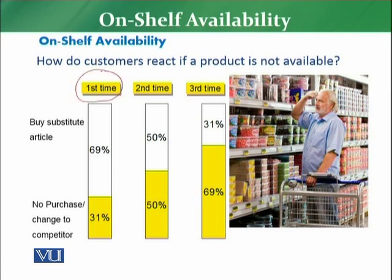First time: if a customer visits a store and does not find that particular product he or she is looking for, then 69% of the time the customer will buy a substitute product. For example, if a customer is there to buy Coca-Cola, maybe he will buy Pepsi. And in 31% of cases, the customer will not purchase or will change to a competitor.